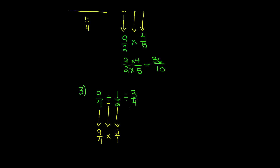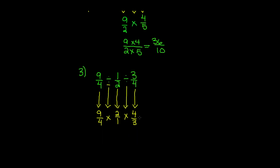Now we have another fraction, and we still have a division symbol, so we're going to change that division symbol into a multiplication symbol and flip the third fraction. We're not going to keep it as it is — we flip it too, so three over four becomes four over three.